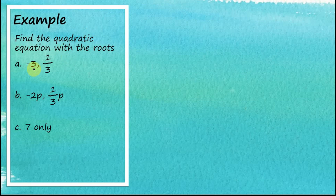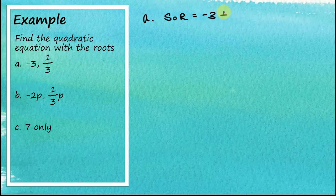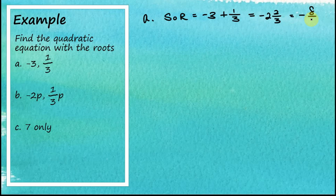Find the quadratic equation with roots: (a) -3 and 1/3; (b) -2p and 1/(3p); (c) 7 only. For part (a), the sum of roots = -3 + 1/3 = -8/3, and the product of roots = -3 × 1/3 = -1.